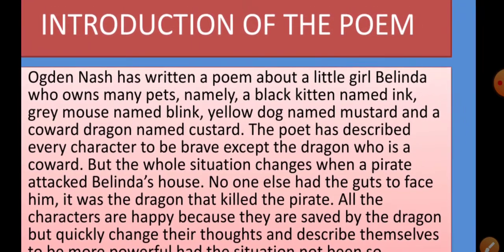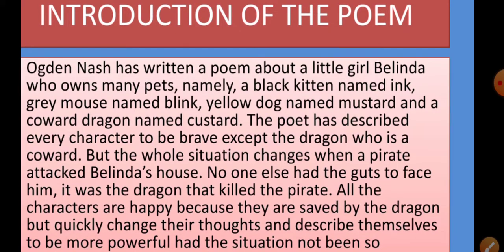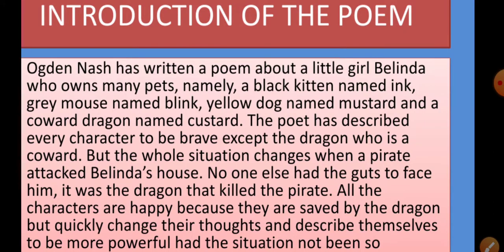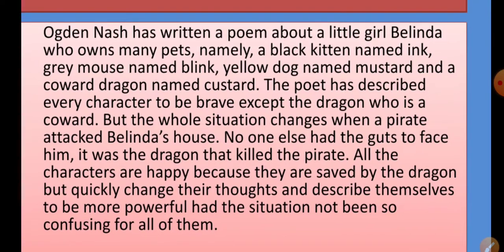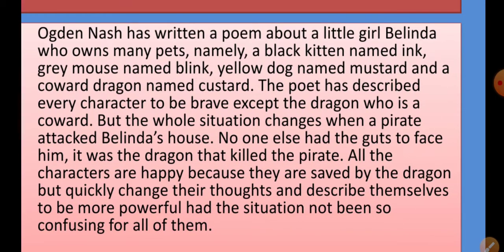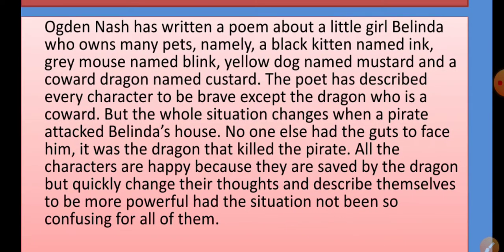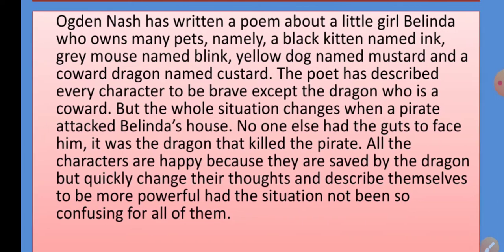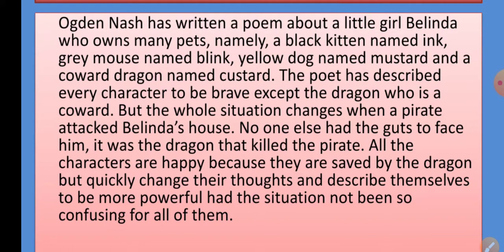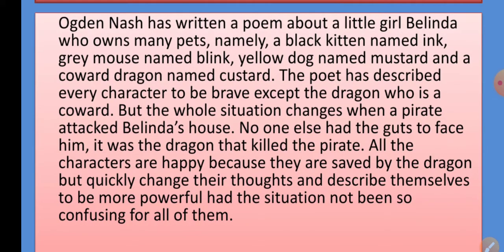Basically, in the introduction of the poem, there is a girl named Belinda who had many pets: Ink, Blink, Mustard, and Custard. Except Custard the dragon, all animals are brave. But one day a pirate attacked Belinda's house, and all other animals were afraid. The dragon showed courage and killed the pirate. After this incident, all the characters are happy because they were saved by the dragon, but quickly they changed their thoughts and described themselves as more powerful, had the situation been in their favor.